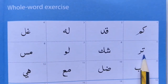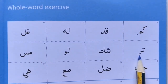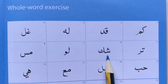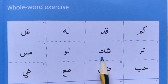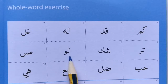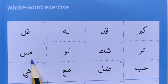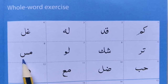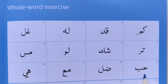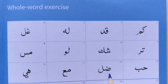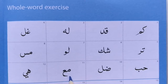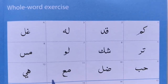Taa, Ra. Sheen, Kaf. Laam, Waaw. Meem, Seen. Haa, Ba. Ba, Laam. Meem, Meem, Ayn. Haa, Yaa.